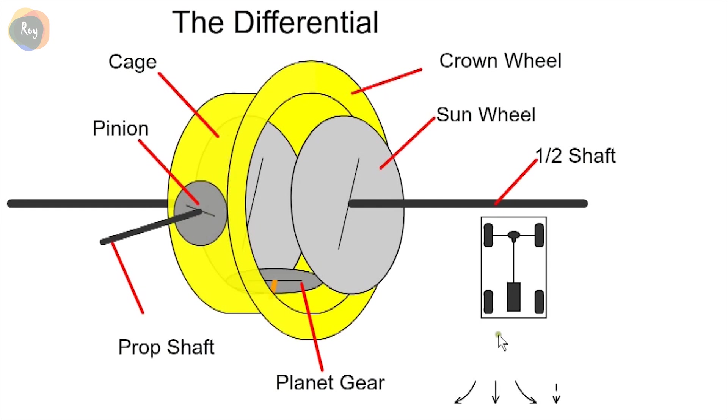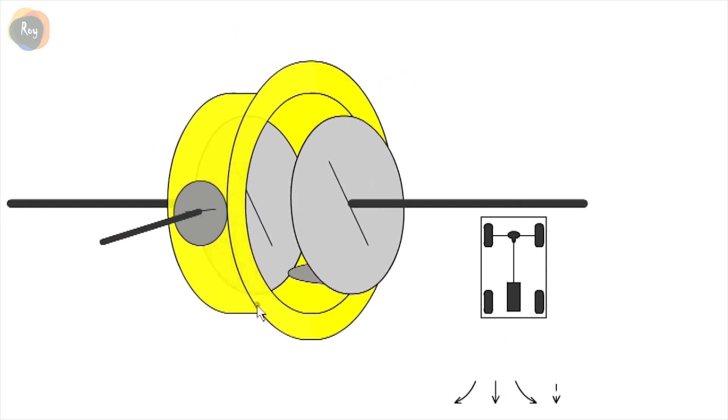When the car drives in a straight line, the input pinion rotates the crown wheel. The planet gear revolves with the cage but does not spin. The planet wheel in turn rotates both sun wheels at the same speed, transmitting power to the road wheels.